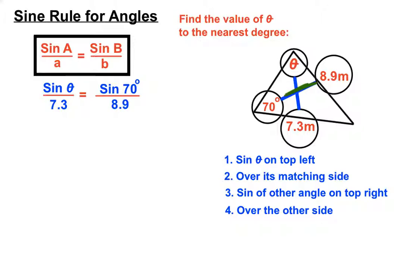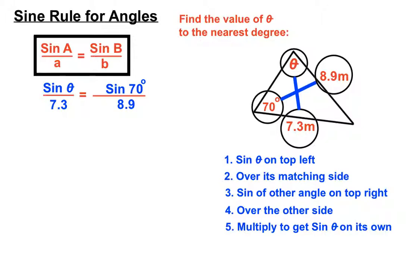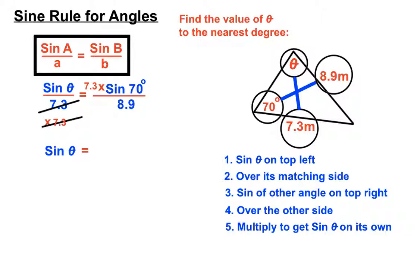Now we have to find theta. We'll multiply to get sine theta on its own. The 7.3 on the bottom is dividing, so we do the opposite operation — multiply both sides by 7.3. On the left-hand side, the dividing 7.3 and the multiplying 7.3 cancel each other out, leaving sine theta on its own. On the right-hand side we have the calculation: 7.3 times sine 70 over 8.9.